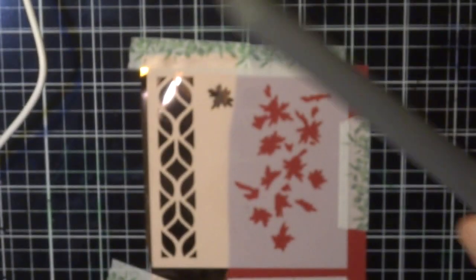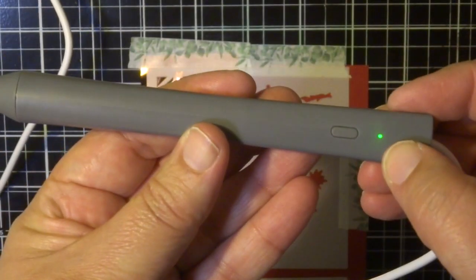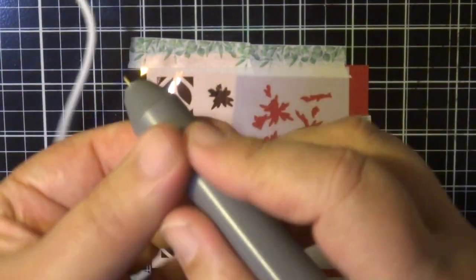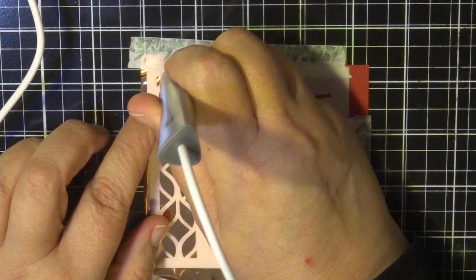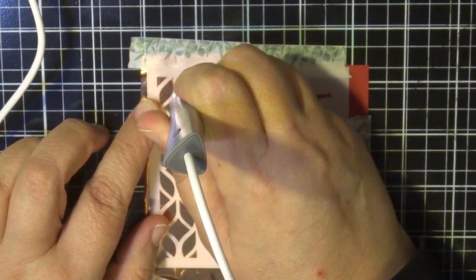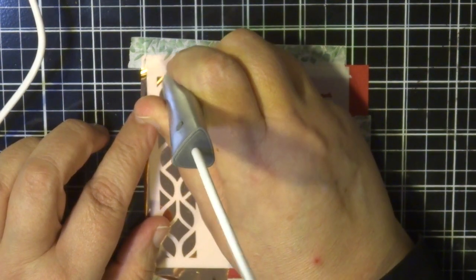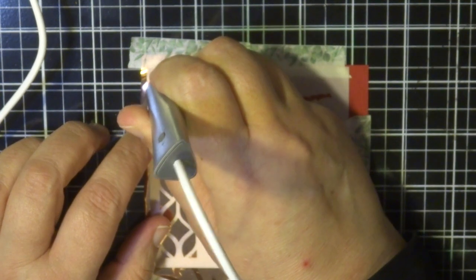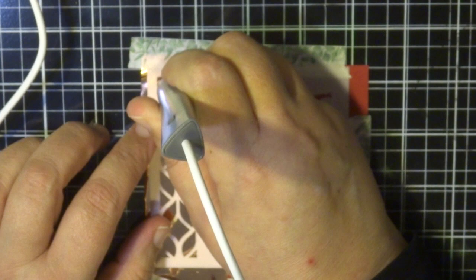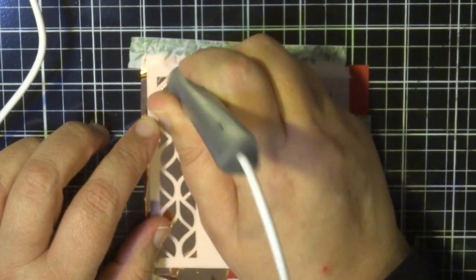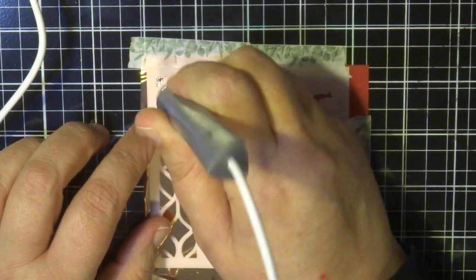So once your nib is hot and it's got a green light, then it's ready to go. One other tip is to make sure that you need to go slowly. You're not drawing very quickly. You need to go really, really slow and steady and ensure that you're holding the actual pen straight up and upright. This is really important to ensure that the heat is transferring through the foil onto your cardstock.